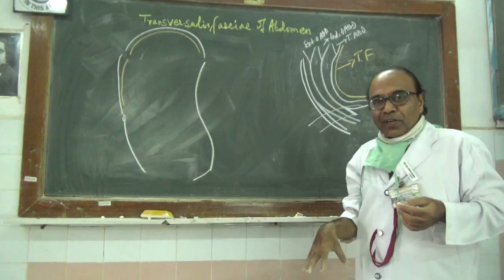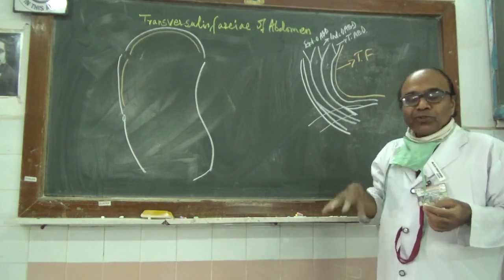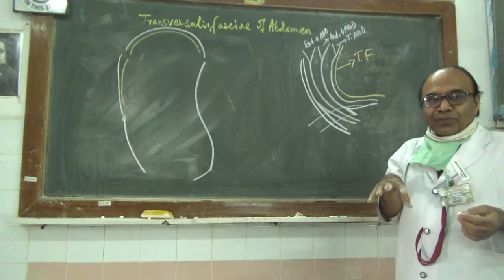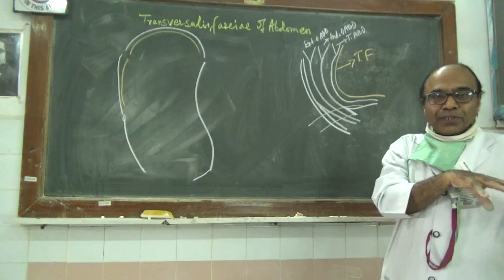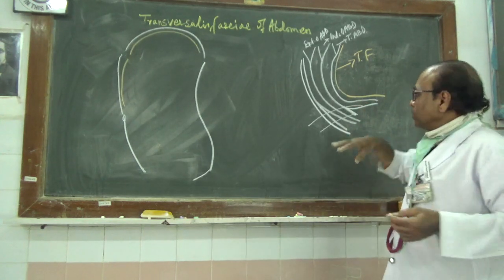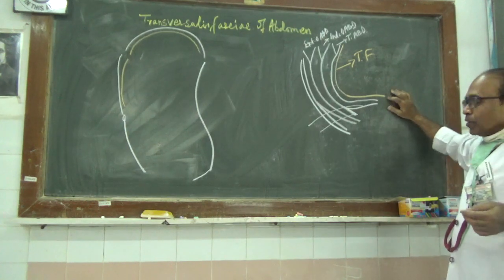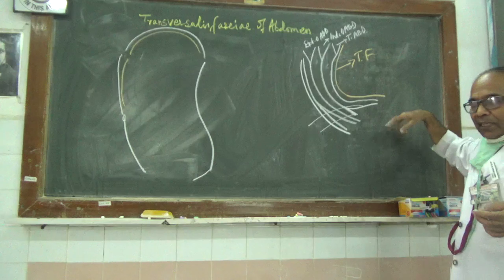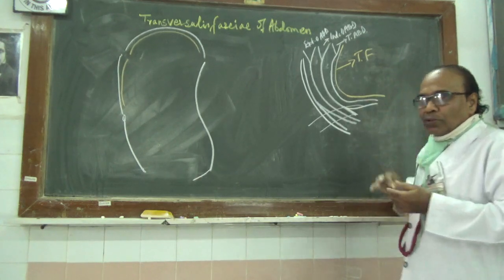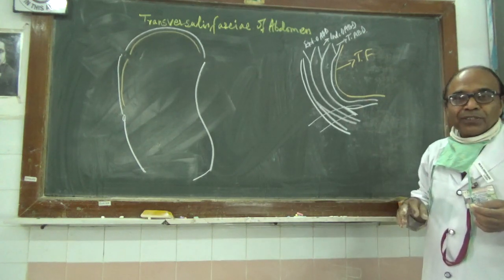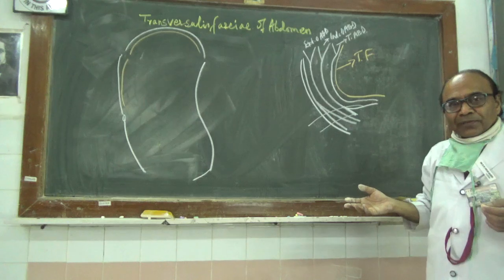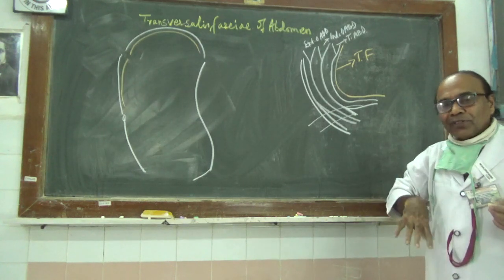This transversalis fascia will run straight downwards where it will come to the pre-renal fascia, renal fascia, then the aortic fascia, pre-aortic fascia, vertebral fascia, pre-vertebral fascia. Then it runs forward to cover the midline and then downwards and a little laterally, after forming the pre-vertebral fascia, pre-renal fascia, it will run further downwards and laterally.